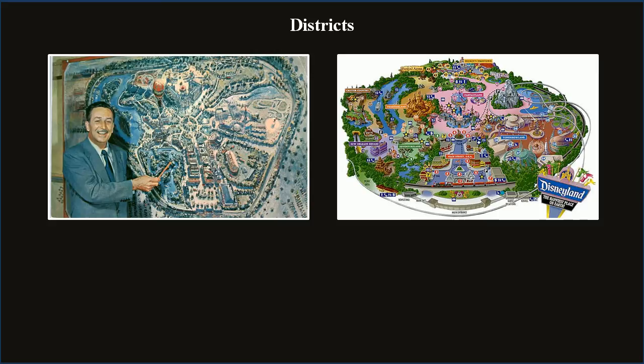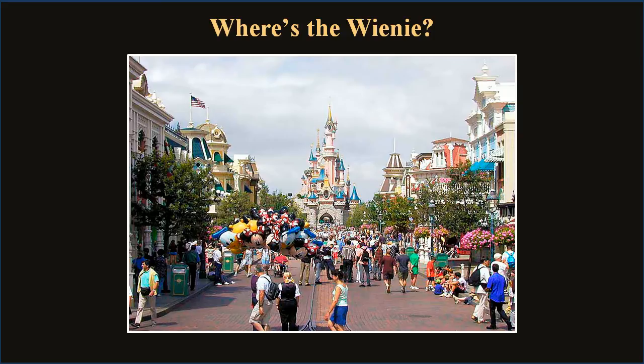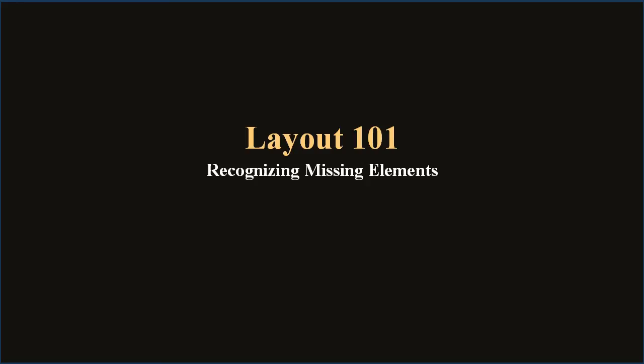When I introduced landmarks earlier, I said some call them weenies. Walt Disney coined this term from an impulse he had when he was younger — when he went to a circus, or the zoo, or an amusement park, the first thing he looked for was the wiener cart. It was his magnet. While originally created for theme park development, these commandments easily apply to video game development. Think back to Disney's Main Street — Sleeping Beauty's Castle is the visual magnet that draws you further into the park.